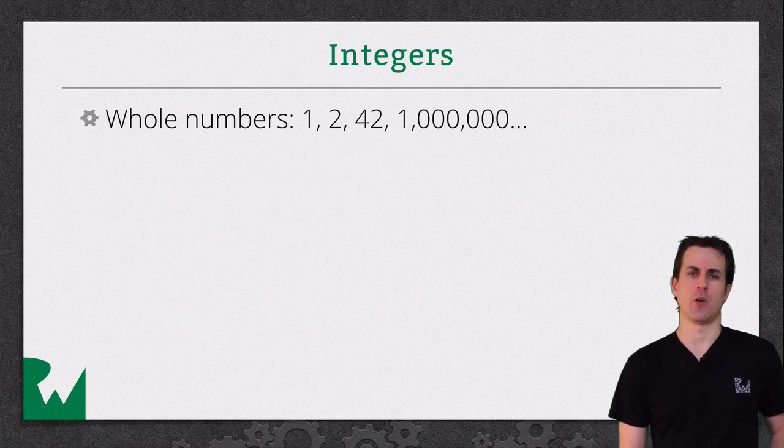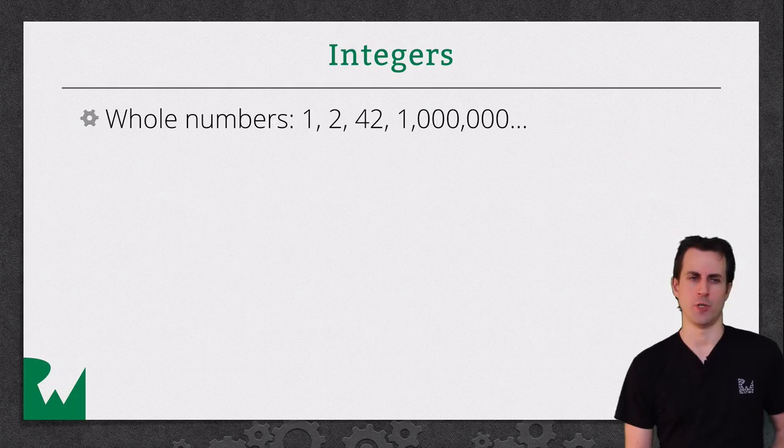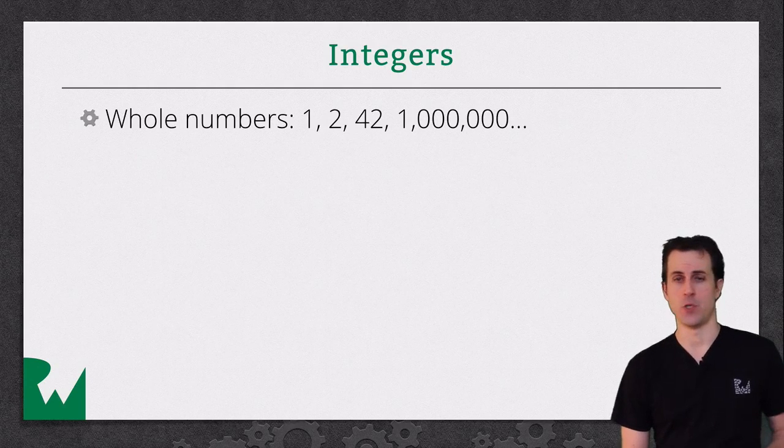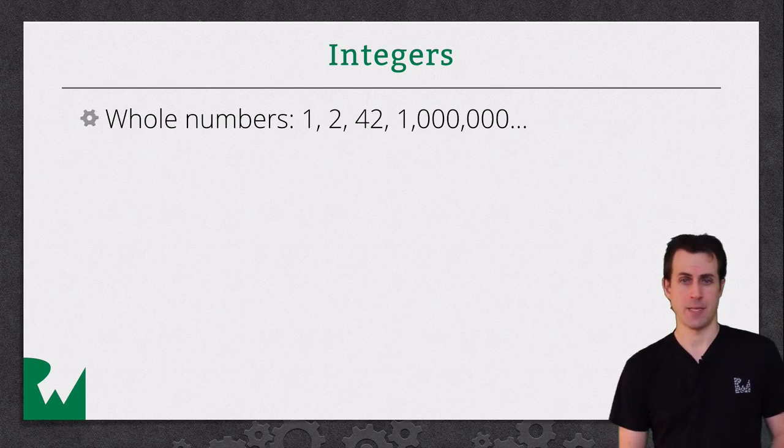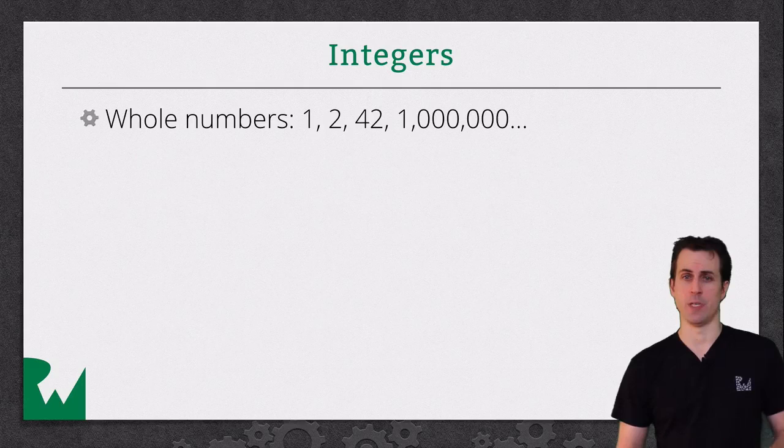Okay, so integer data types are the data type used to store whole numbers, like 1, 2, 42, a million, and so on. Not decimal numbers. There's a different data type for that, which we'll get to in a separate video.